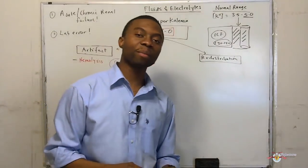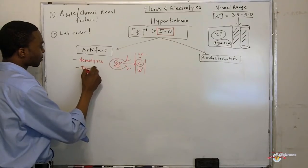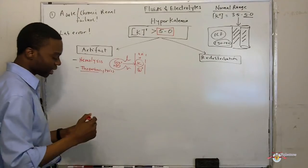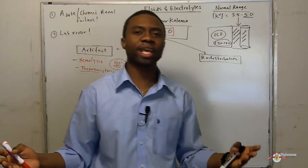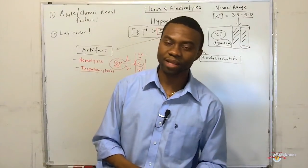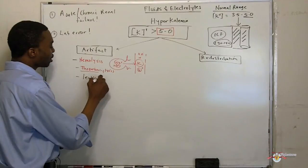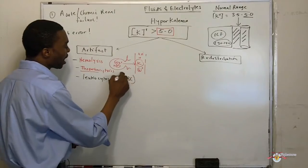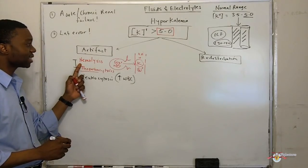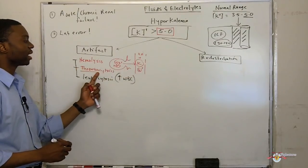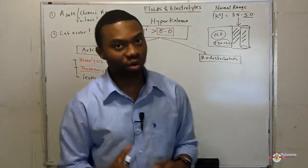Another way we can develop spurious hyperkalemia is thrombocytosis — thrombo means platelets. If you have a lot of platelets running around, you can develop hyperkalemia. Patients with a platelet count over 500,000 to 600,000 can develop hyperkalemia. Or you can have leukocytosis — that's a very high white count. All you need to know is: if red blood cells are lysing, or if you have a lot of platelets and white blood cells floating around, that gives a spurious picture of hyperkalemia.